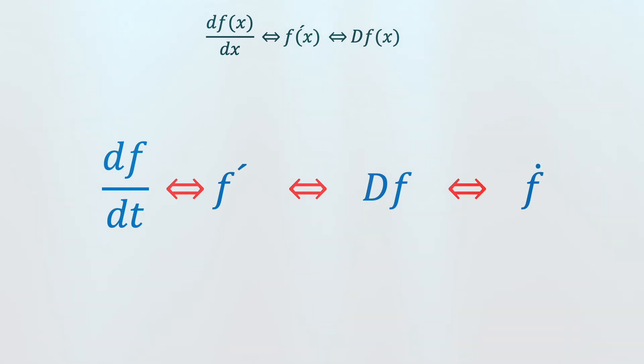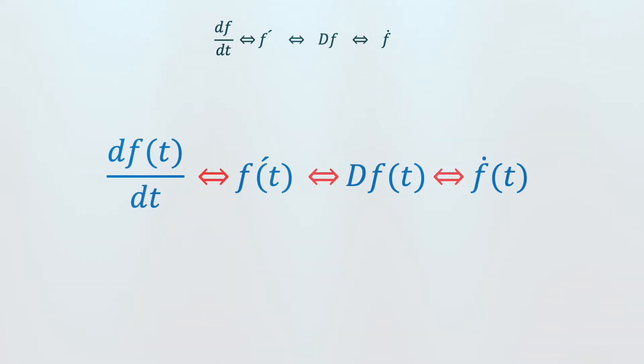When the independent variable x is time t, in this case we need to say df/dt ⇔ f' ⇔ Df ⇔ ḟ. And if the function is written as f(t), then we will say df(t)/dt ⇔ f'(t) ⇔ Df(t) ⇔ ḟ(t).